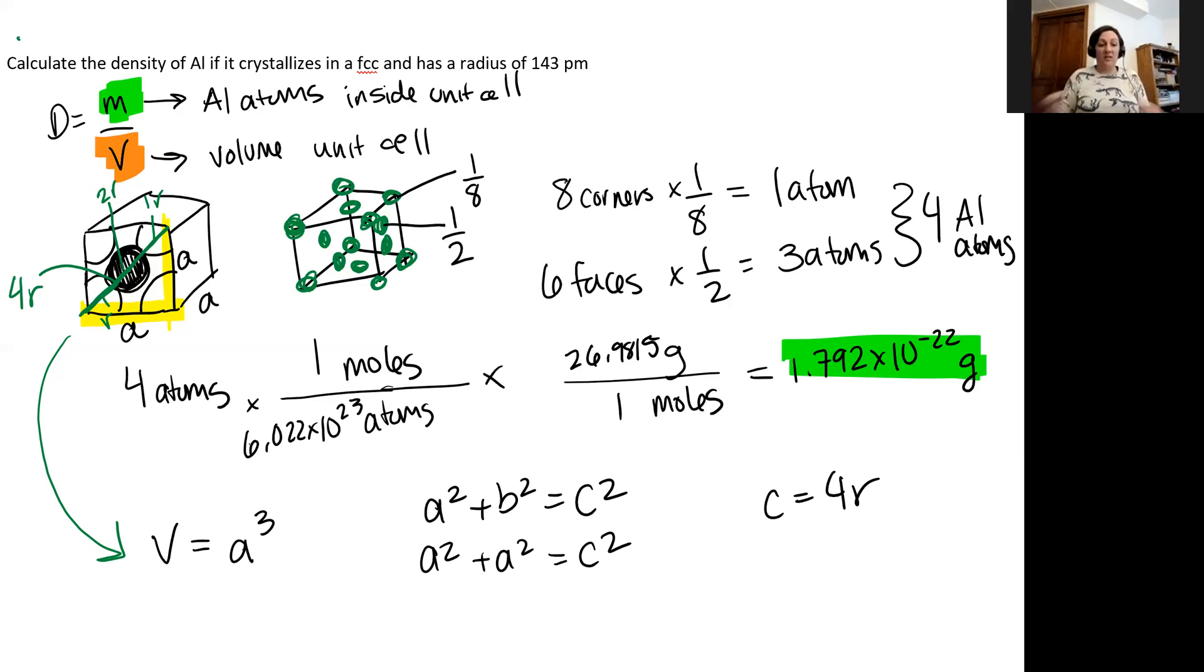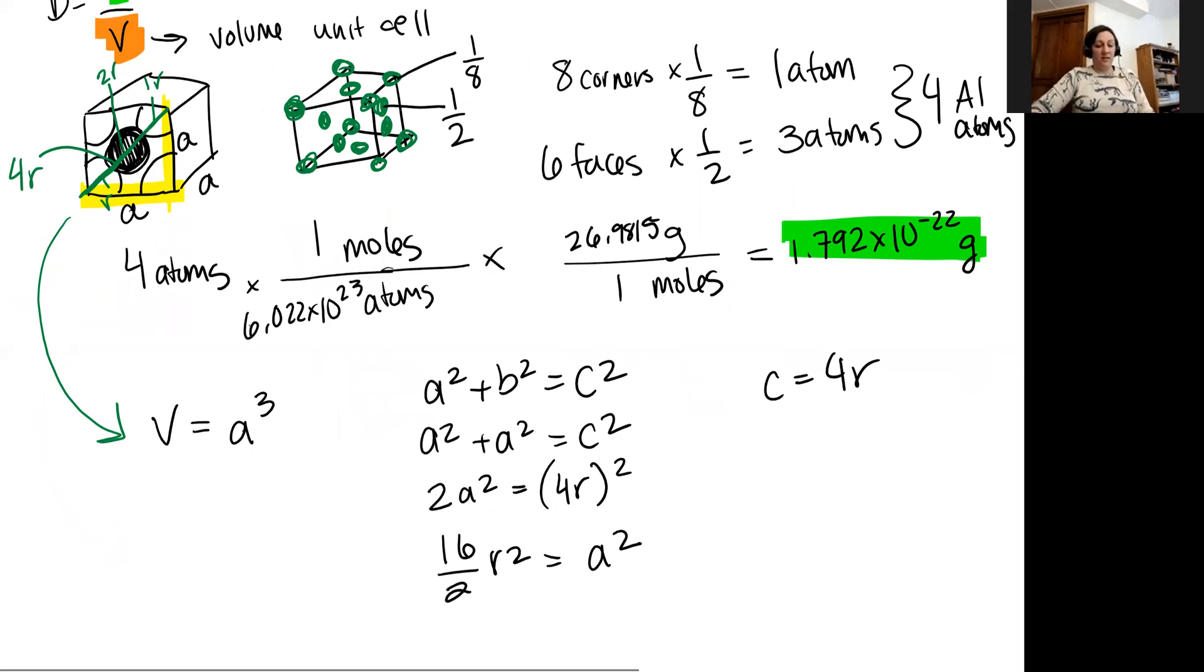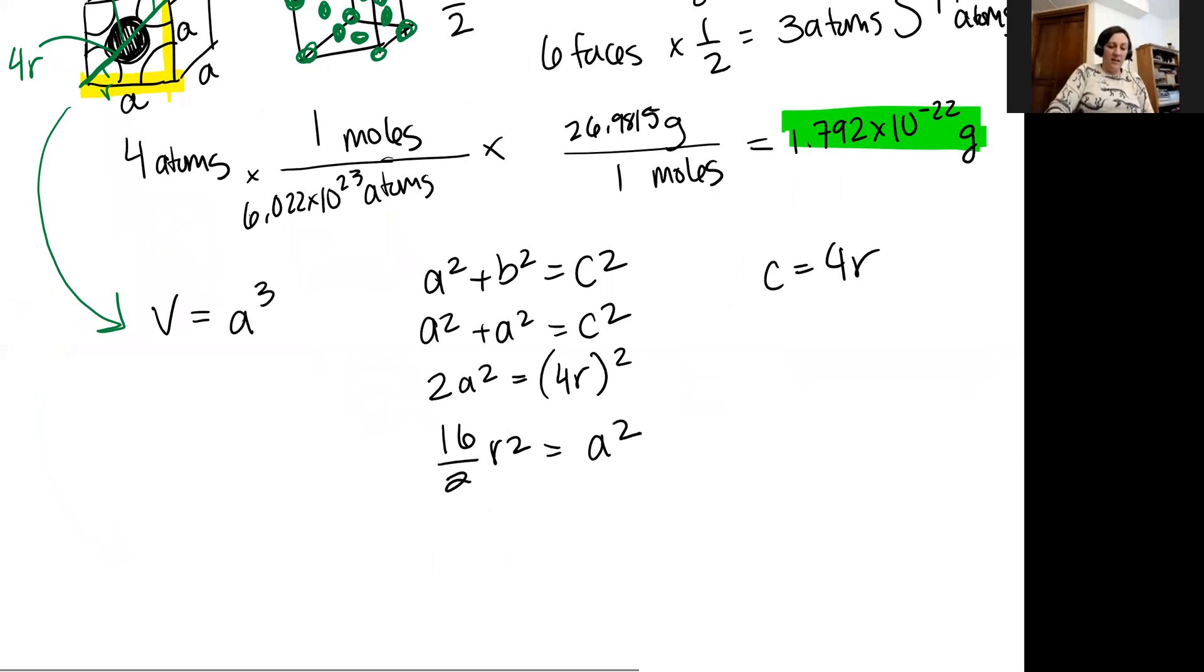I determined that just from my radius of aluminums, actually my atoms touching. So I can rearrange this into two A squared is going to be equal to four R and that whole term will be squared. Now I'm starting to get somewhere. So I can continue to rearrange this. I'm going to get 16 over two R squared is going to be equal to A squared. Rearranging some more and solving this, I'm going to end up with the square root of eight times the radius is equal to that length A.